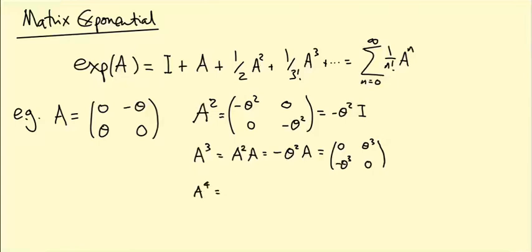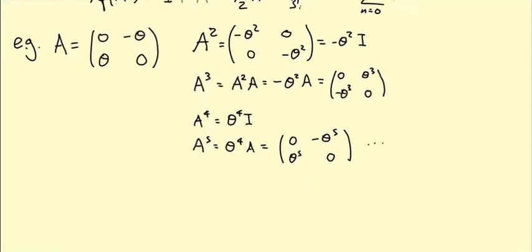A to the 4 is just A² squared, so that's θ⁴ times the identity. A to the 5 is A⁴ times A, so that gives us θ⁴ times A, which is [[0, -θ⁵], [θ⁵, 0]]. I'm going to stop there because hopefully the pattern's becoming clear. The even powers are going to be plus or minus θ to the even power times the identity, and the odd powers are going to be [[0, θ^(odd)], [-θ^(odd), 0]], or possibly with the signs switched.